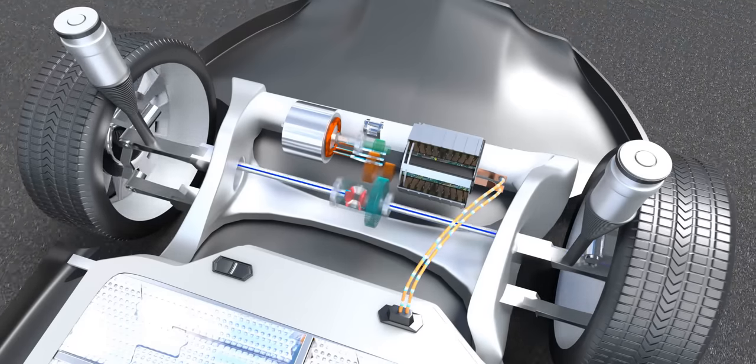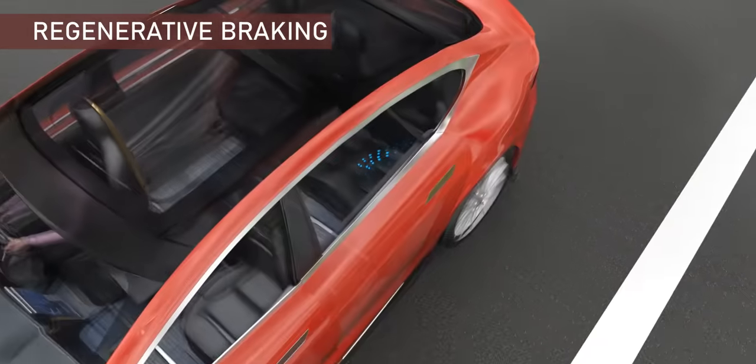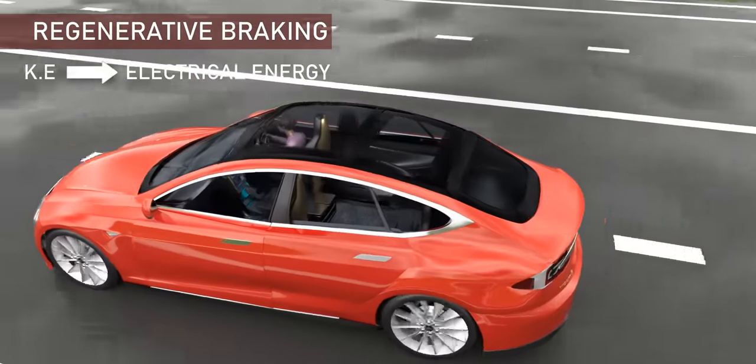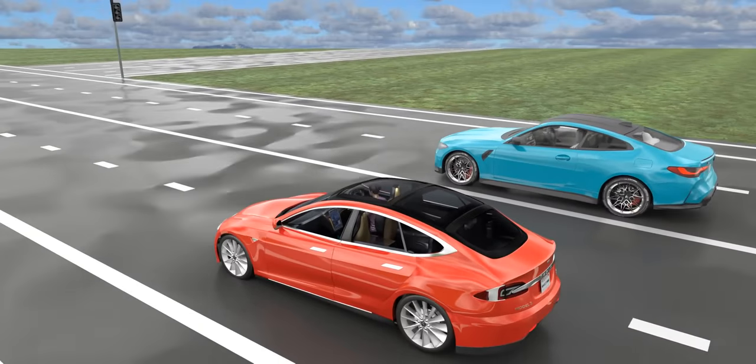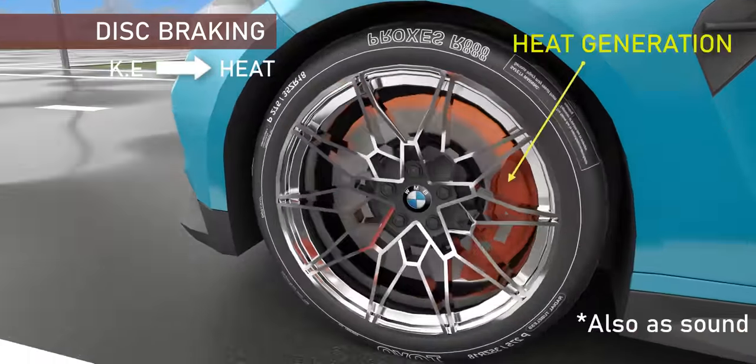In short, during the regenerative braking, the vehicle's kinetic energy is converted into electrical energy and stored in batteries. Please see this comparison with a normal disc brake-based system. In such systems, when the brake is applied, the entire kinetic energy of the vehicle is lost as heat.